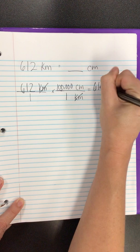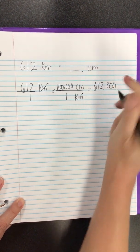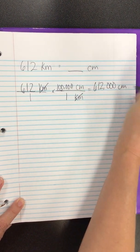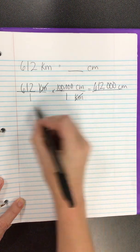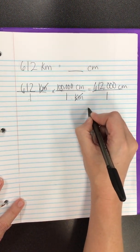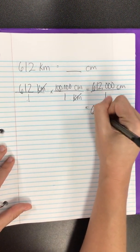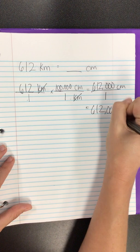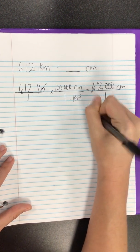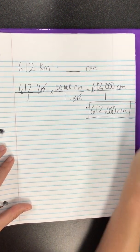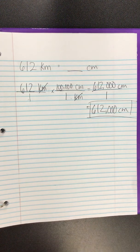Multiply across, 612,000 centimeters. Got to have units, and then 1 times 1 is 1 and there's no need to round but we don't need to leave that as a fraction, so we'll make it 612,000 centimeters. That's a lot.